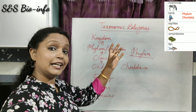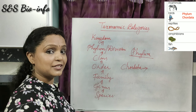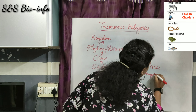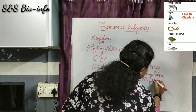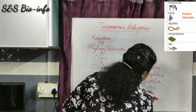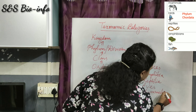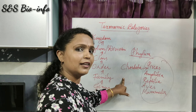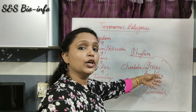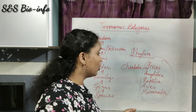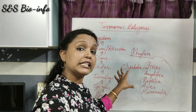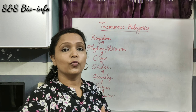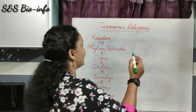The phylum Chordata comprises related classes like Pisces, Amphibia, Reptilia, Aves, and Mammalia. These closely related classes are included in the same phylum Chordata because they all have a notochord and a dorsal hollow nerve chord in them.